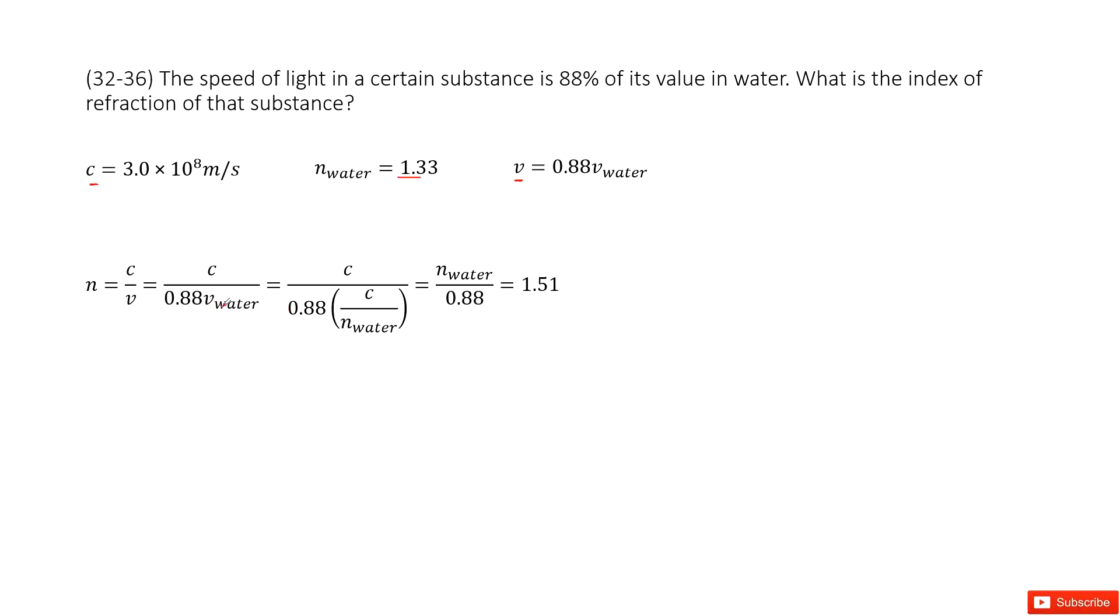The speed of light in water can be written as C divided by the index of refraction in water, so C divided by n_water. Then C cancels and we can simplify the equation.